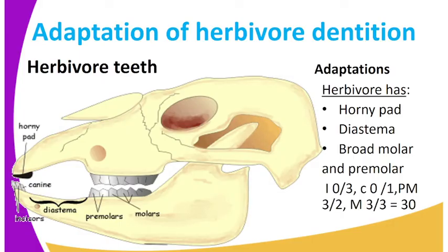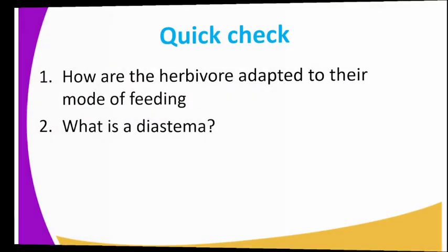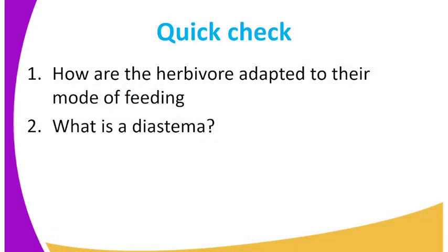We've come to the end of the lesson and I hope you've understood. The herbivores feed on plants only and they have their diastema, they have their horny pad, they have their broad molars and premolars for chewing. The horny pad is the part where grass is pressed when being cut.